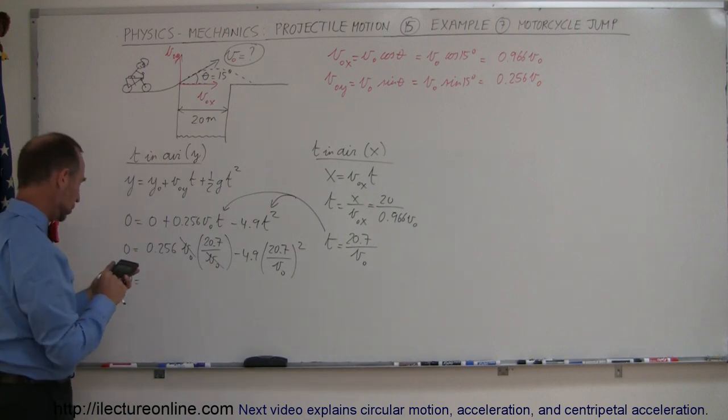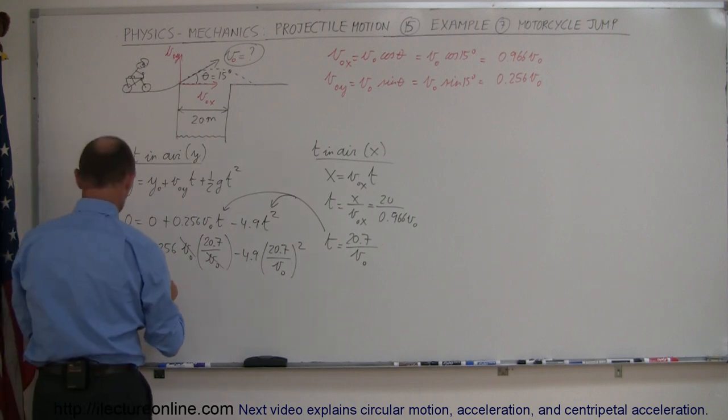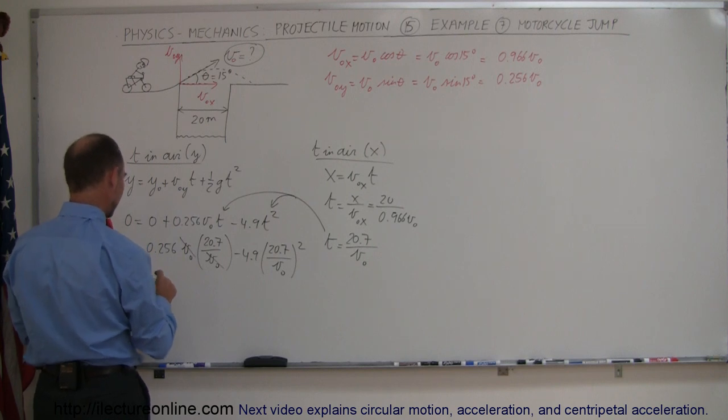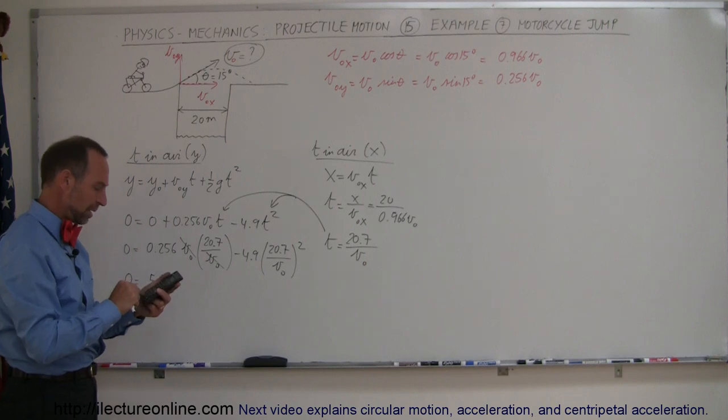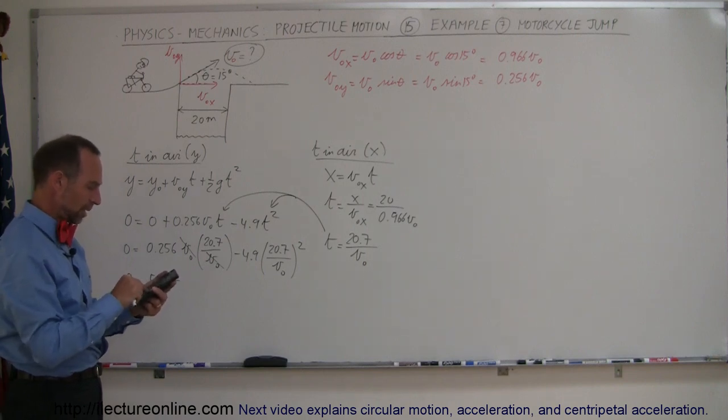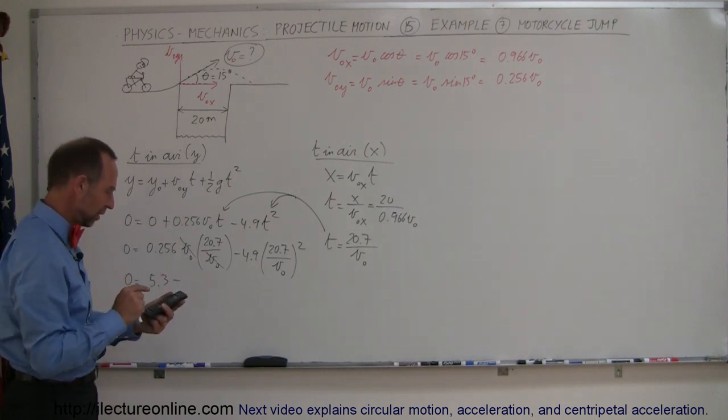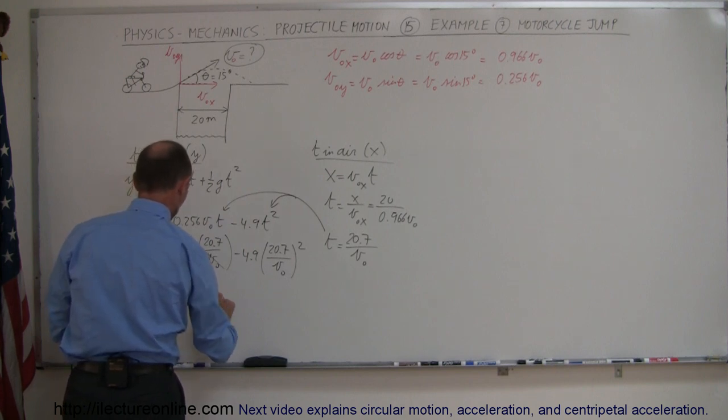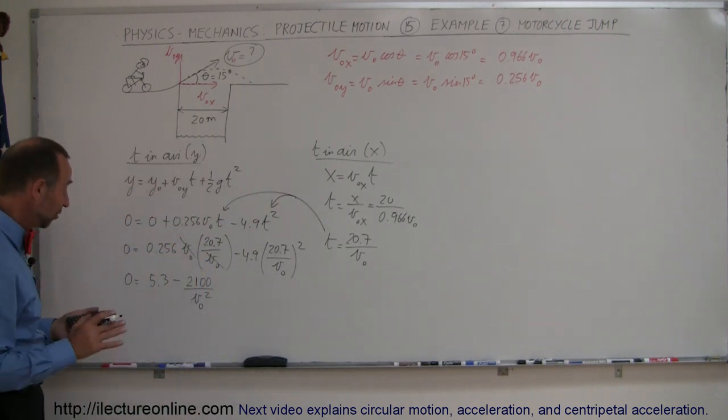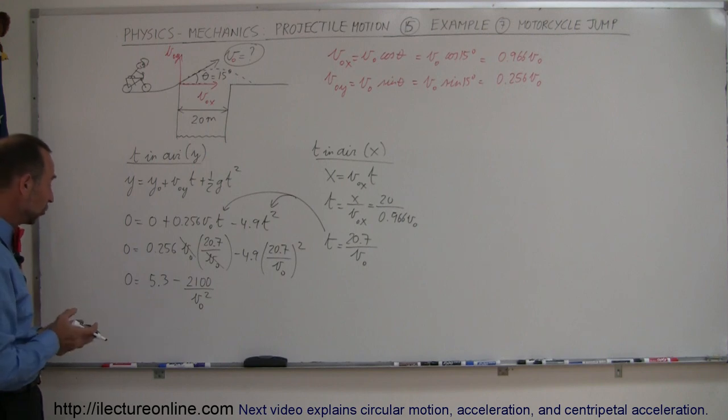Minus so we have 20.7 squared times 4.9 equals that would be minus 2100 so minus 2100 divided by v initial squared. Okay now you can see how this is simply solving for equation with v initial squared.